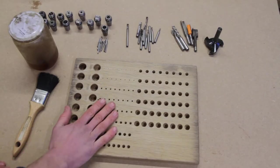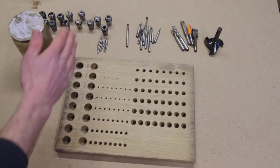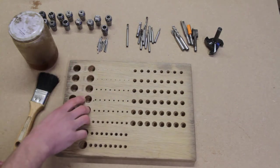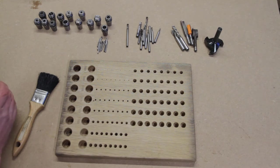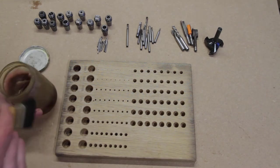So the last part is to oil the collet holder. I'm using some linseed oil mixed with a little bit of turpentine.